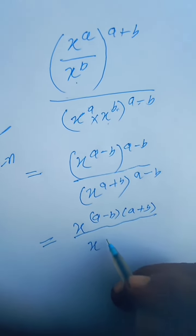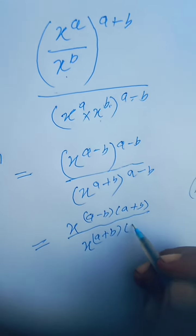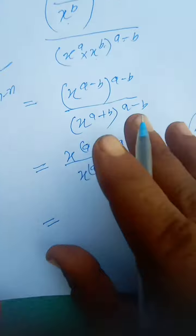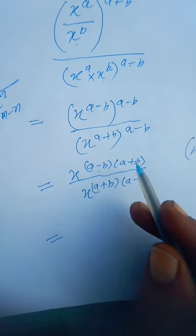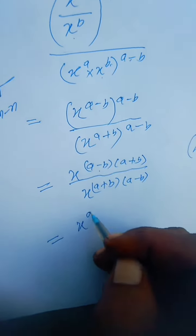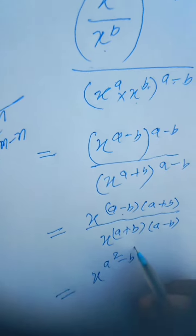Further, a minus b times a plus b, this will be x to the power a square minus b square.